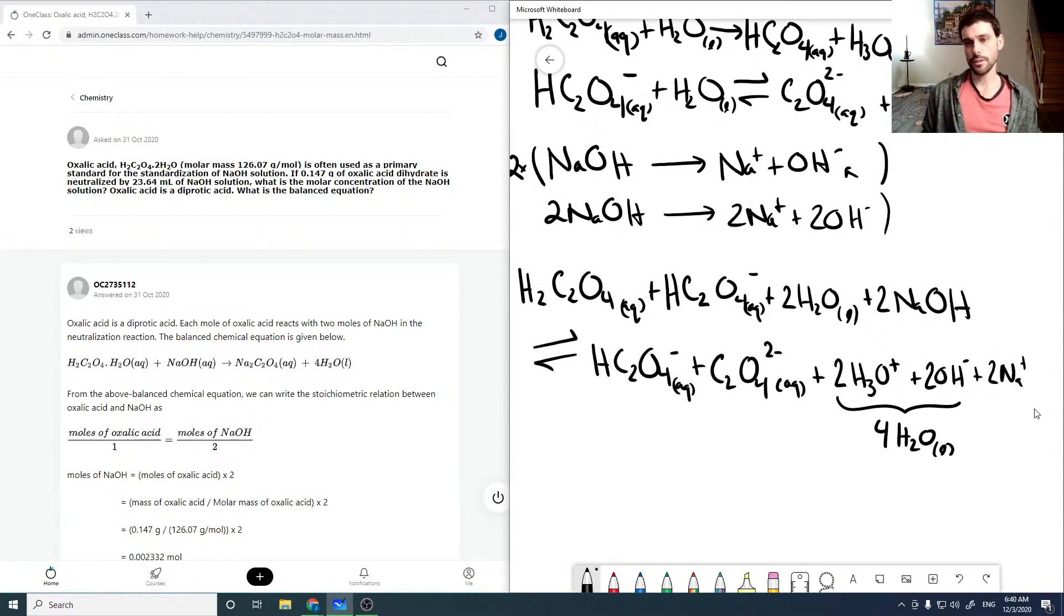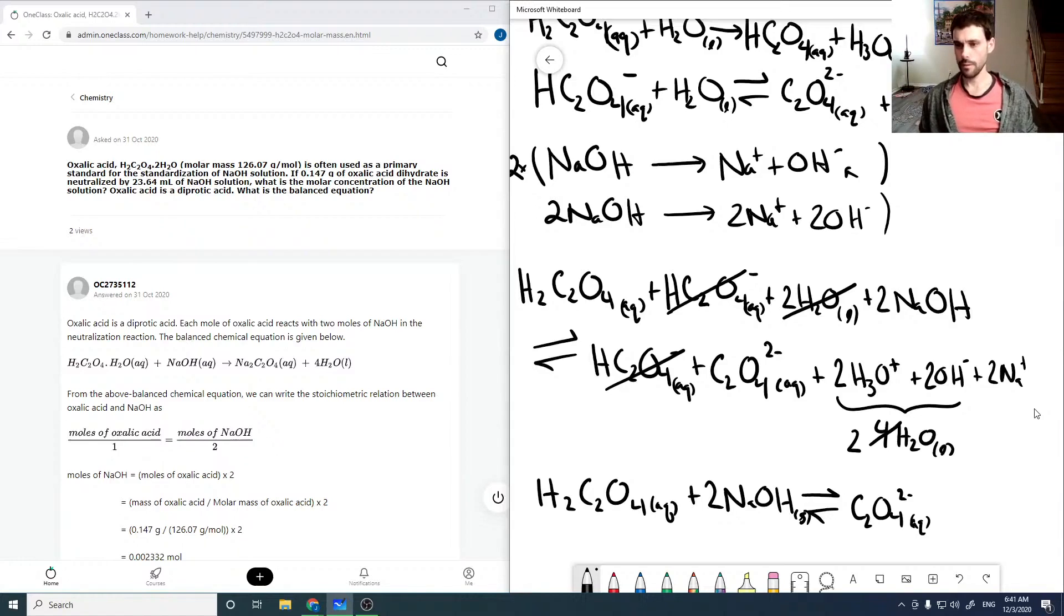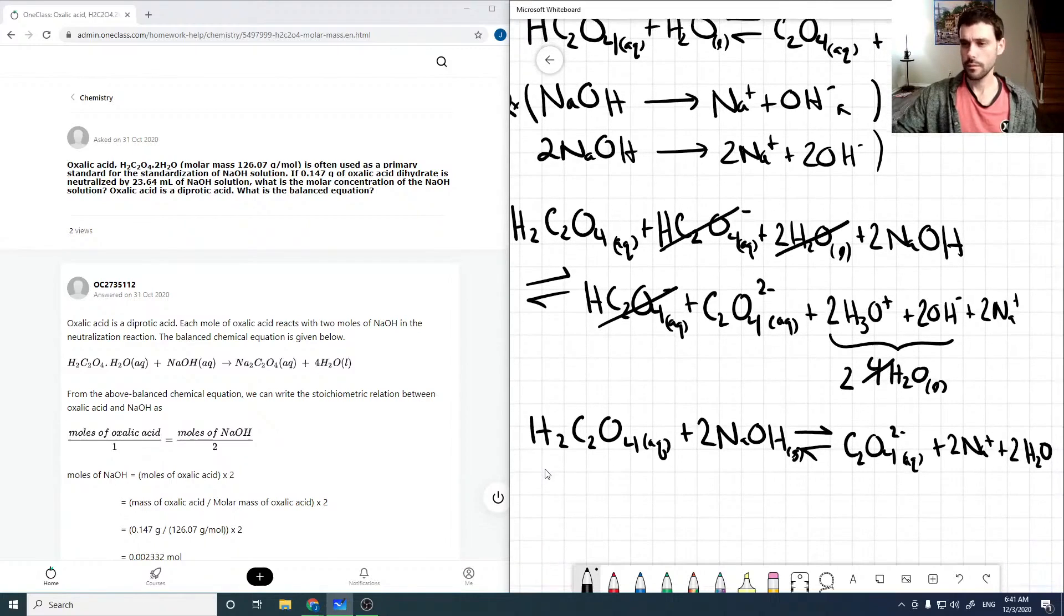And also we can cancel all things that are the same on both sides, so that will go. And we can cancel two of these waters. And so then in the end we're going to have H2C2O4 plus 2 NaOH gives us C2O4 2 minus solid plus 2 Na plus plus 2 H2O. So that would be the final chemical equation.